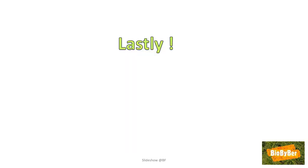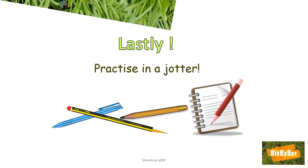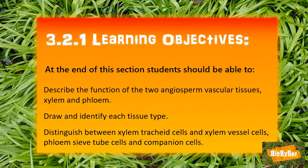At the end of the day, you must be able to draw large, clear, well-labeled diagrams of these structures and know the functions of each part — practice in a jotter. Now that we've reached the end of our lesson, have we achieved our objectives? Can you describe the function of the two angiosperm vascular tissues xylem and phloem? Can you draw and identify each tissue type? Can you distinguish between xylem tracheid cells and xylem vessel cells, and between phloem sieve tube cells and companion cells?